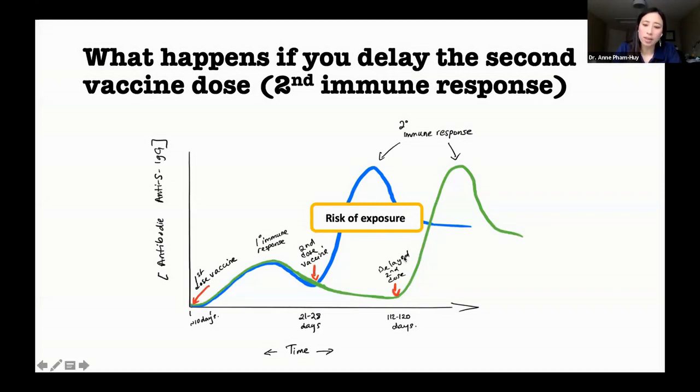So again, based on clinical immunology, clinical vaccinology principles, I don't think that delaying the second dose is going to harm the effectiveness of the vaccine. I think you'll still get your secondary immune response.